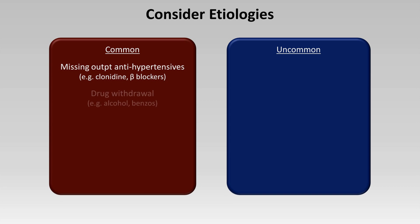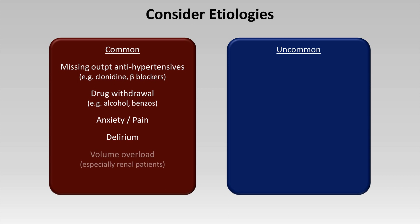Other common etiologies include drug withdrawal such as that seen with alcohol and benzos, anxiety and pain, delirium, and volume overload. While volume overload can occur in a wide variety of settings, overload leading specifically to acute hypertension is seen especially in patients with chronic kidney disease. And finally, acute stroke.